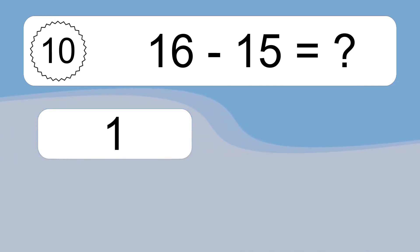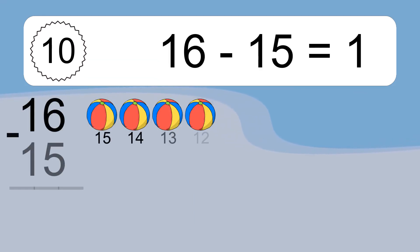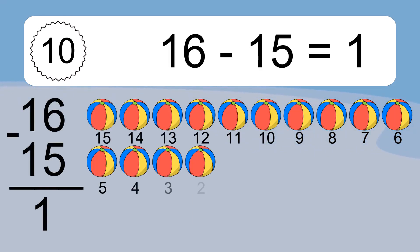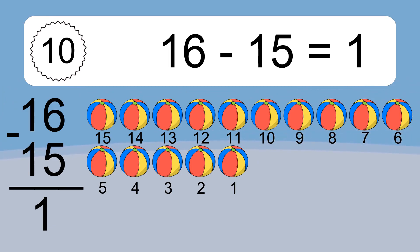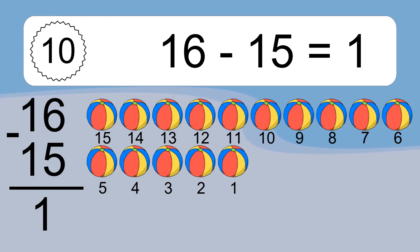9 minus 4 equals 5. Let's count it: 8, 7, 6, 5. 16 minus 15 equals what? 16 minus 15 equals 1. Let's count it: 15, 14, 13, 12, 11, 10, 9, 8, 7, 6, 5, 4, 3, 2, 1.